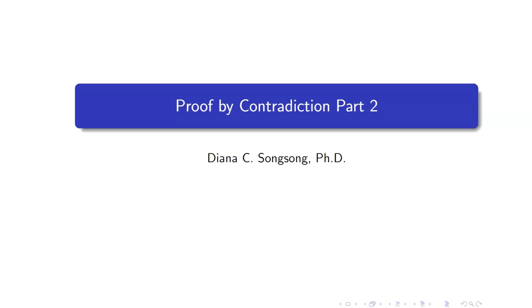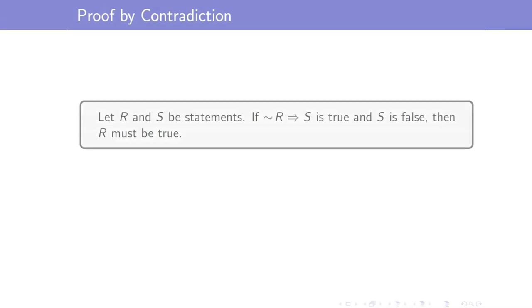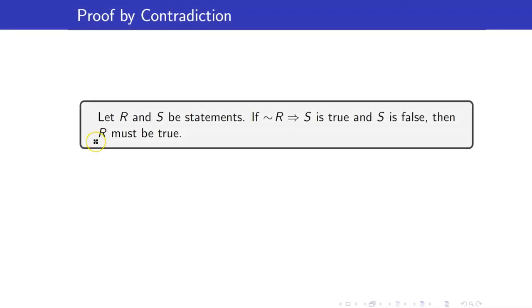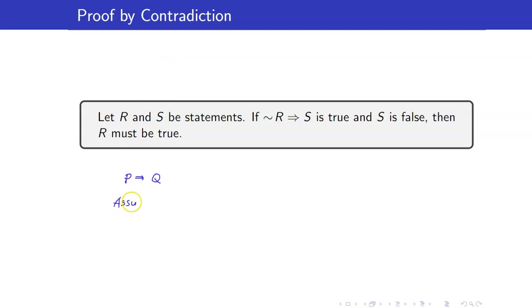In this lesson, we will continue our discussion of proof by contradiction. Let us recall the method: suppose we want to establish that statement R is true. We assume that it is false and find a contradiction. Once we have found a contradiction, the original statement must be true. In our previous video lecture, we proved implications P implies Q by contradiction — we assumed P and the negation of Q, found a contradiction, and therefore Q must be true.